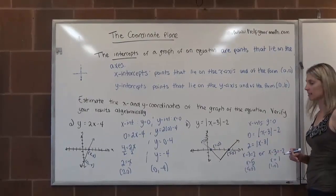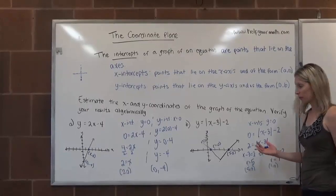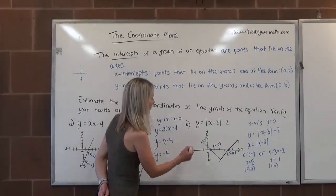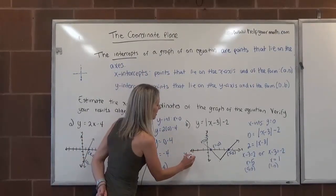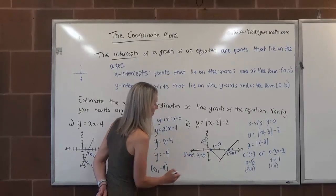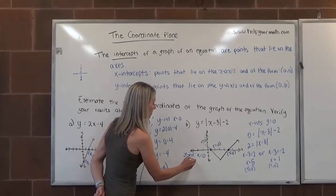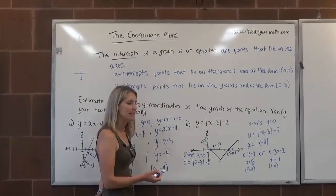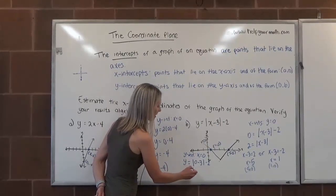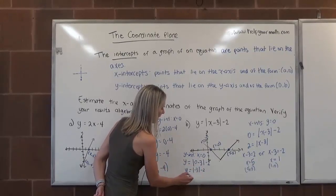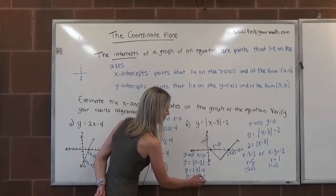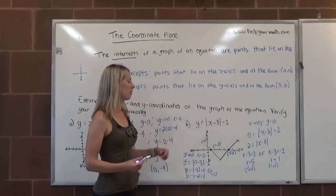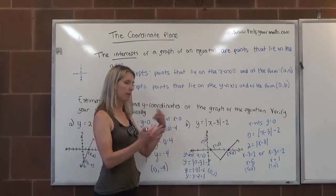Now finding the y-intercept — we substitute in 0 for x: y equals the absolute value of 0 minus 3, minus 2. Zero minus 3 is negative 3; the absolute value of negative 3 is 3. So y equals 3 minus 2, which equals 1. We have a y-intercept at (0, 1), confirming what we read from the graph.